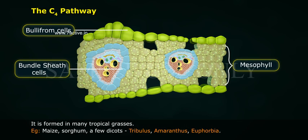The C4 pathway is found in many tropical grasses, for example maize, sorghum, and a few dicots such as Tribulus, Amaranthus, and Euphorbia.